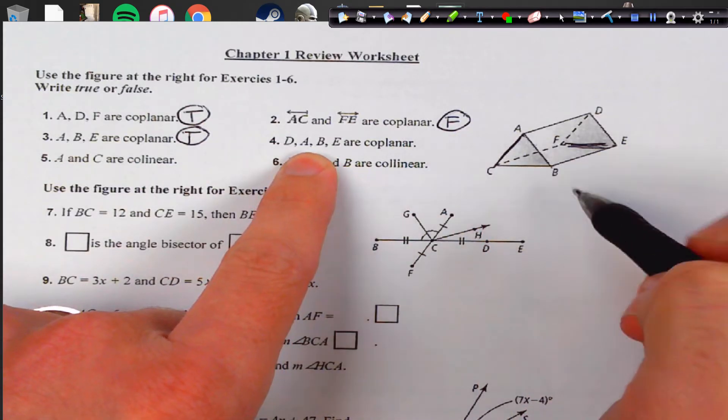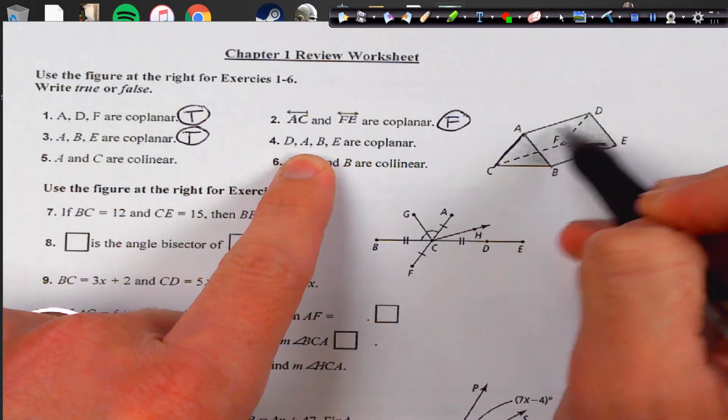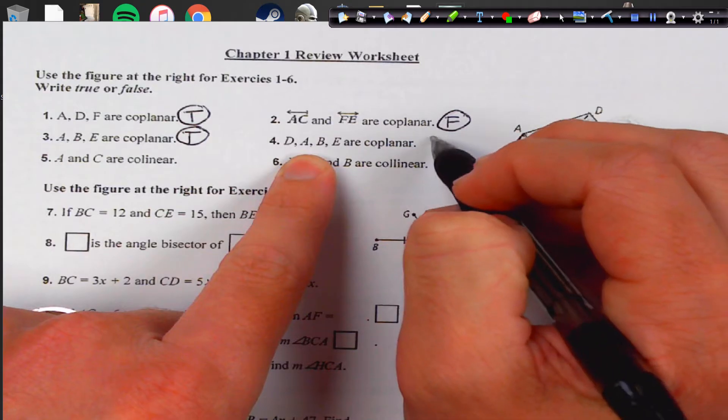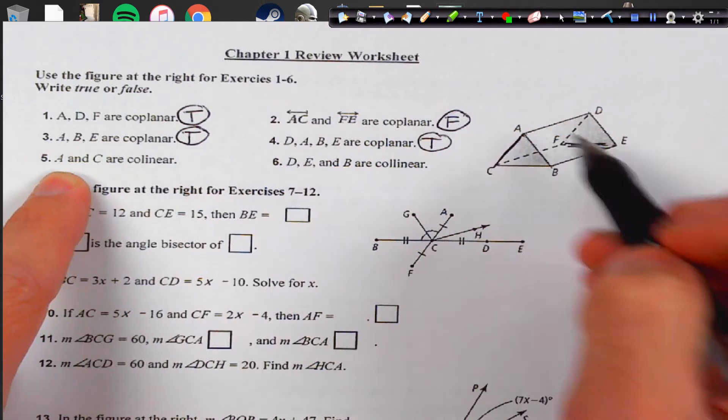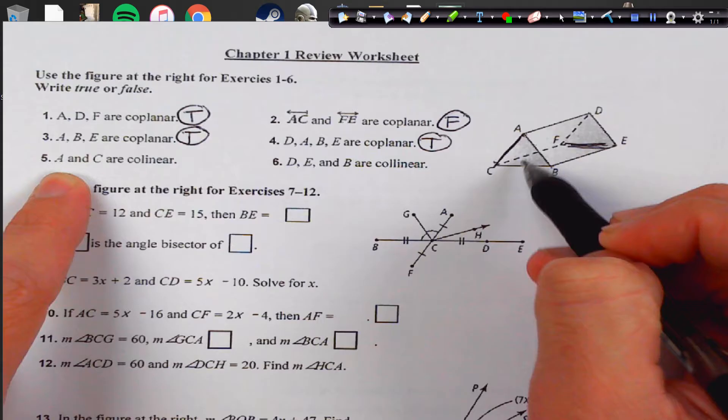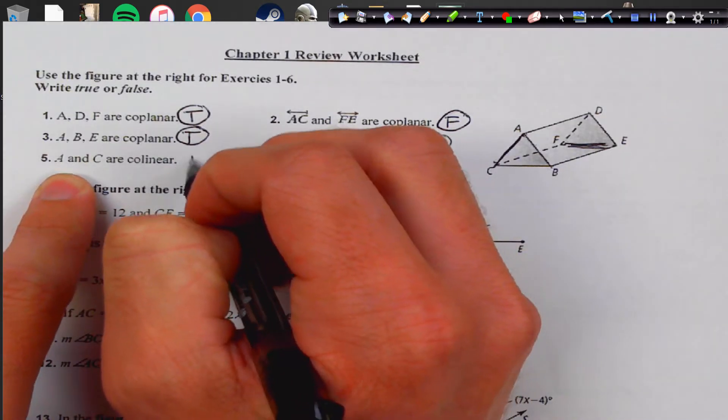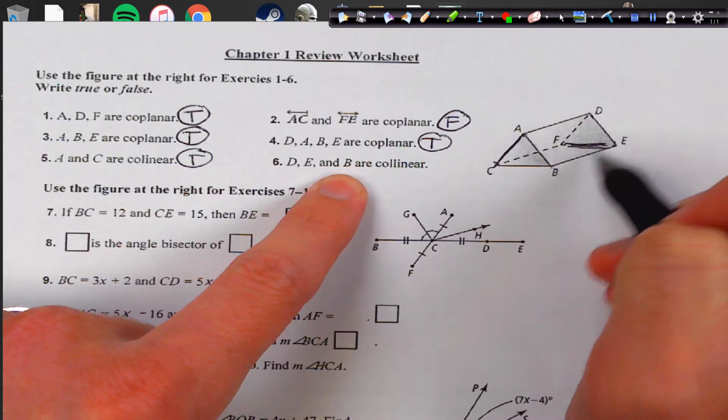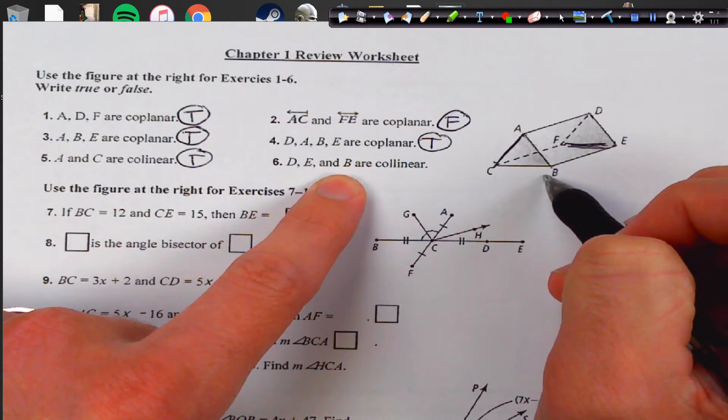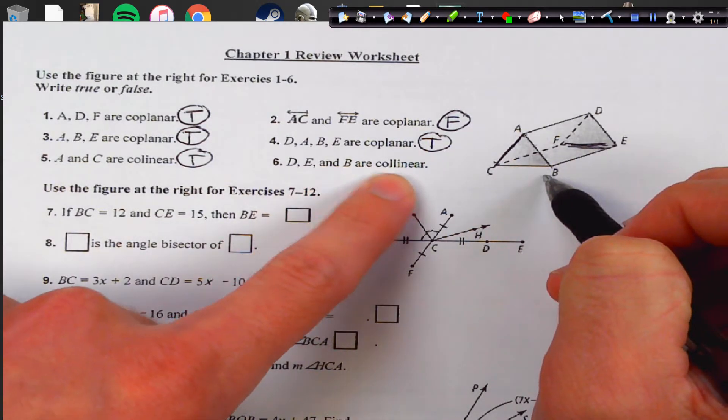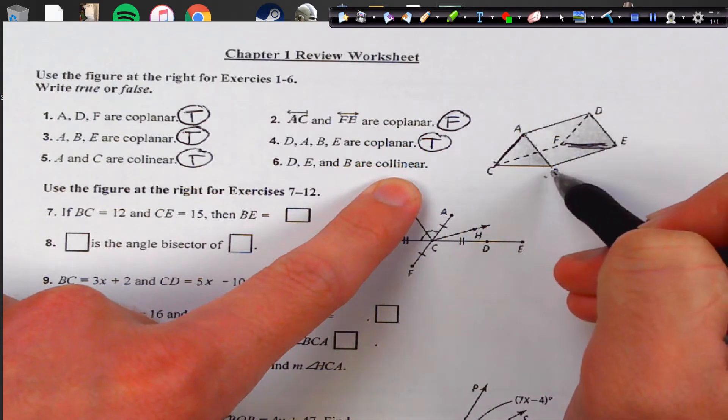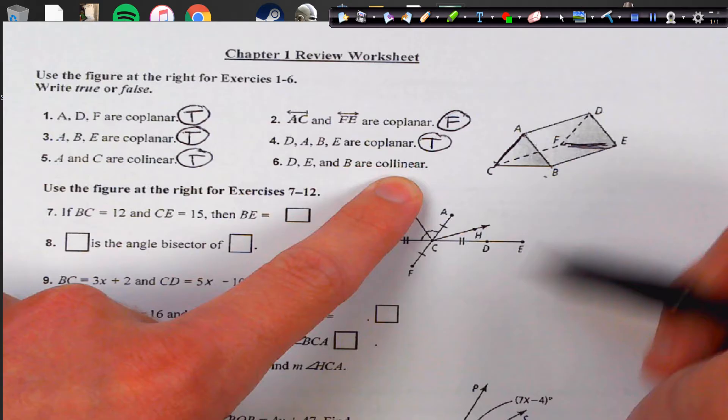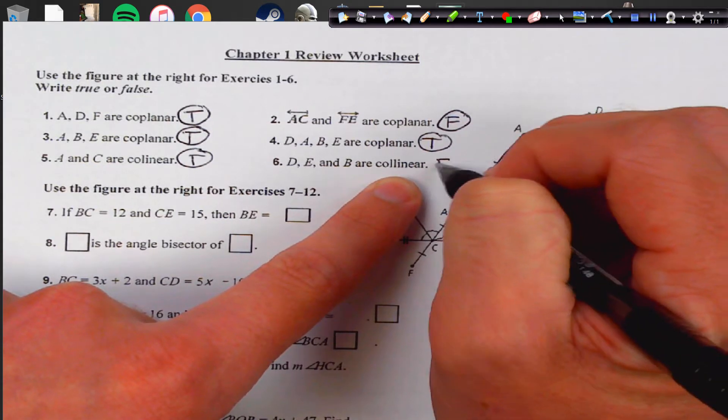A, B, E are on the same plane, they're on this front facing plane, true. D, A, B, E, they all are on this front facing plane, true. A, C are collinear, yes they're on this plane right here, the triangle plane. D, E, B are collinear. Collinear, we've got to be careful, means on the same line. D, E, and B do not have the same line, they're on two separate lines, so that would be false.